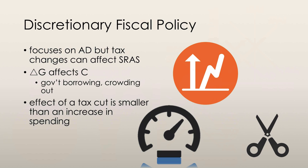Government spending will increase incomes, which will increase consumption, and so on. Increases in government borrowing will raise the real interest rate and decrease investment. The demand side effects of a tax cut are likely to be smaller than an equivalent increase in government expenditure because only a part of an increase in disposable income is spent on consumption — some income is saved or spent on imports, which does not increase the domestic country's real GDP.